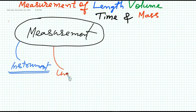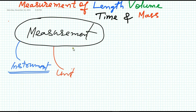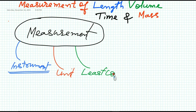Next comes the unit of that instrument — what is the practical unit? The units of length include kilometer, meter, feet, centimeter, and millimeter, but each instrument has a practically assigned unit. After that, the most important thing is the least count. Every instrument has a least count — it is the smallest measurement that can be done with that instrument.